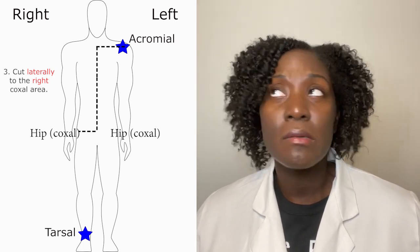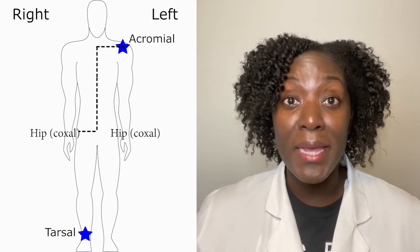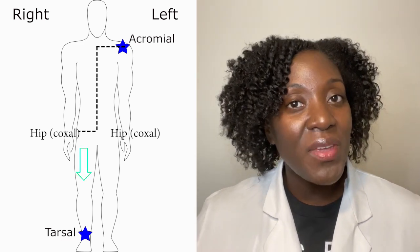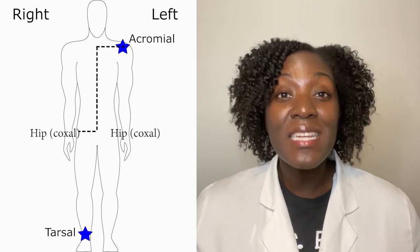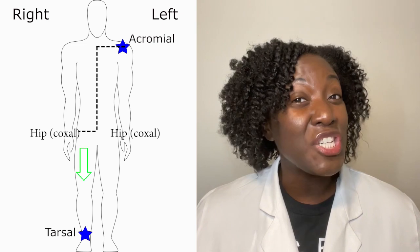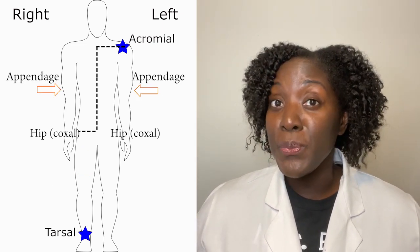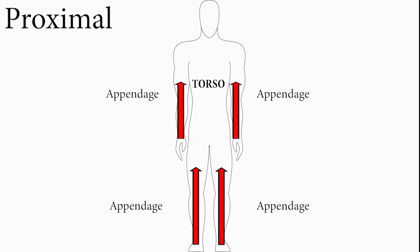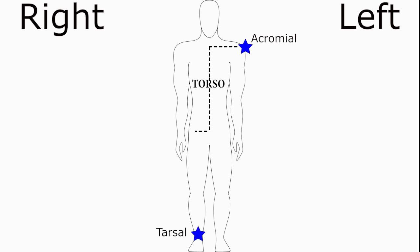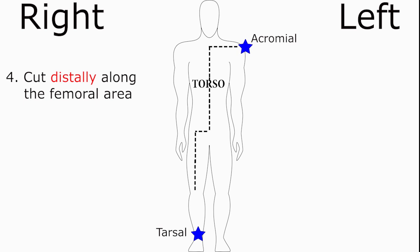Dr. Reed, you don't have much longer — you need to wrap this up. Okay, so now we need to move south again to reach the tarsal. Here's the biggest mistake my interns make: since we are now moving down the leg, which is an appendage — your arms are appendages too — we will now use the terms proximal and distal. Proximal means closer to the torso and distal means further away from the torso. Since the tarsal is further from your torso, we will cut distally along the femoral area, which is your thigh.